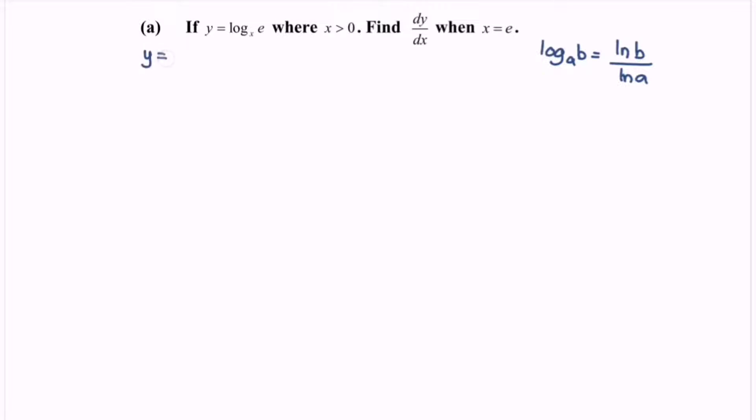So y equals ln e over ln x. Let me rewrite this. As we know, ln e equals 1. So y equals (ln x) to the power of negative 1.